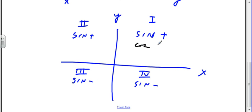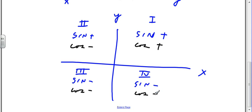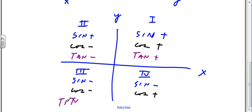How about cosine? Cosine is going to be positive in the first quadrant, negative in the second, negative in the third, and positive in the fourth. Then I look at tangent: tangent is going to be positive in the first quadrant, negative in the second, positive in the third, and negative in the fourth quadrant.